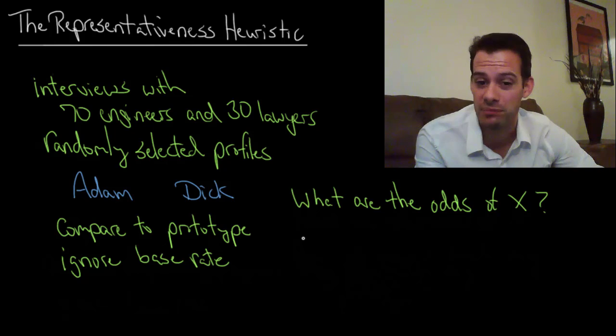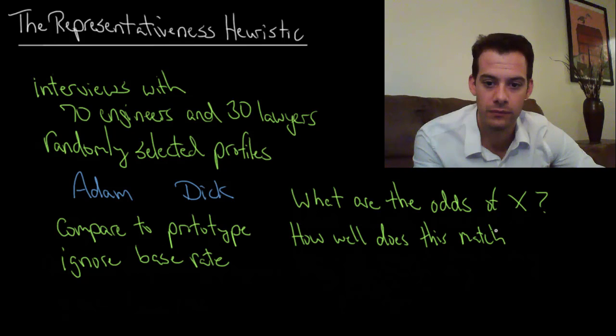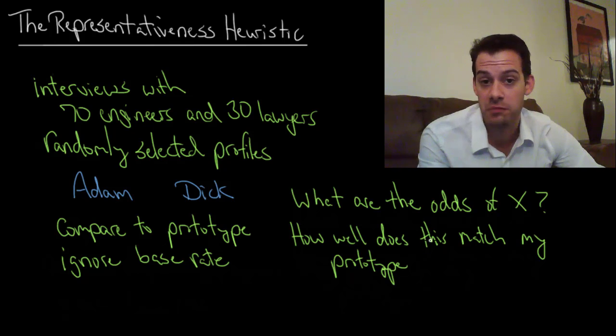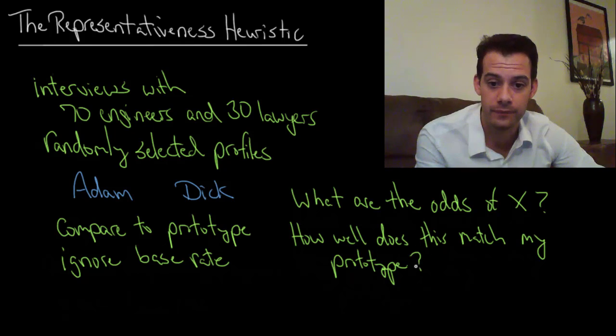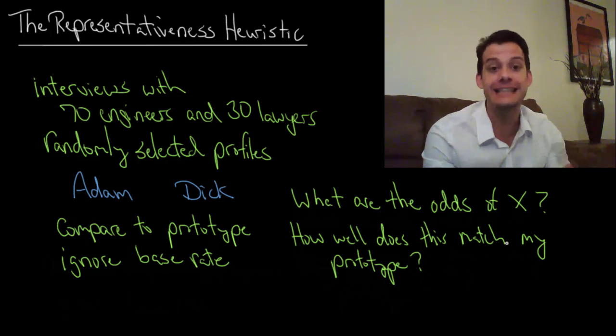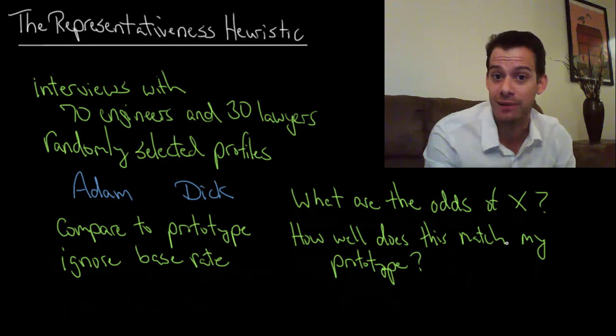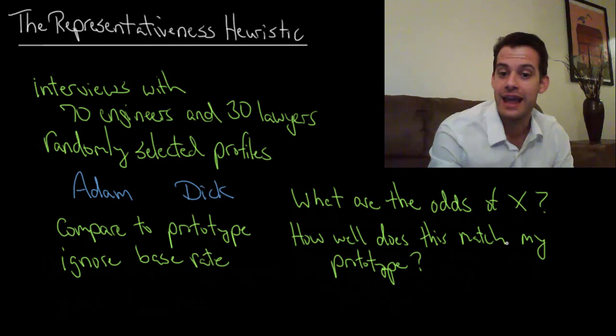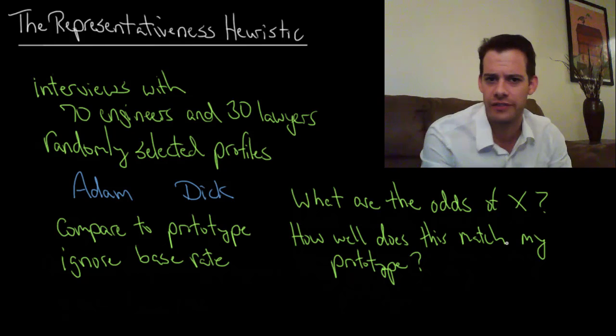And so the shortcut is to say, how well does this match my prototype? Now here's a question that we can answer. How well does this match my prototype of that? So instead of what are the odds that this person is a lawyer, say how well does this person match my prototype of a lawyer? And there's a question that we can answer. We can say, oh Adam, he sounds like a lawyer, fits my profile, my prototype, fits my stereotypes about what a lawyer is or what an engineer is. And so the idea is, if it matches my prototype, then I'll say that the odds are high. And if it doesn't match my prototype, I'll say that the odds are low.